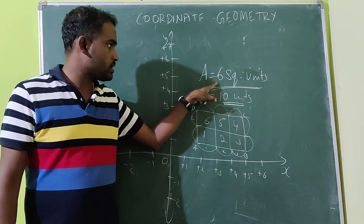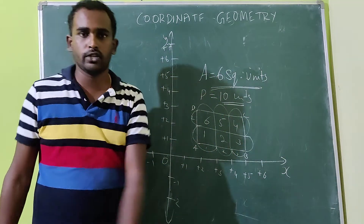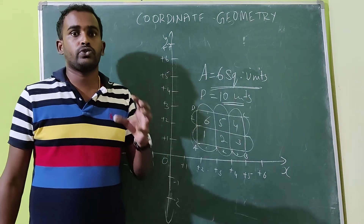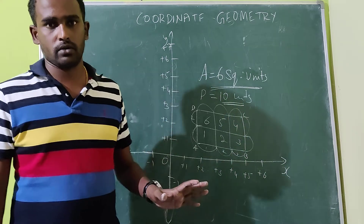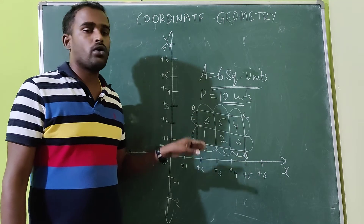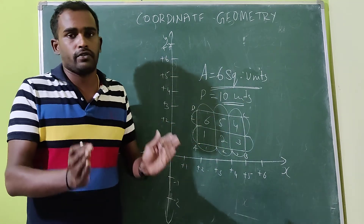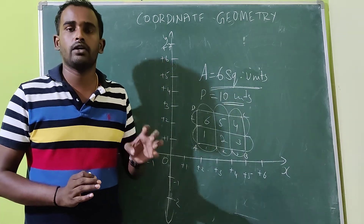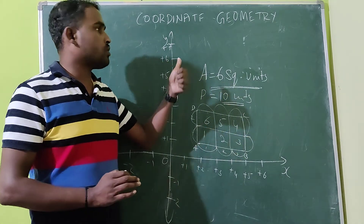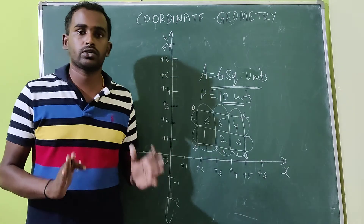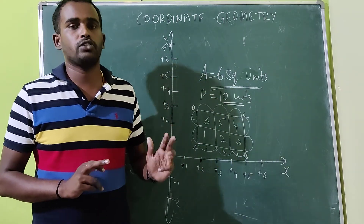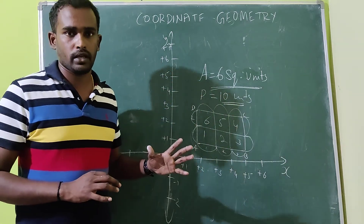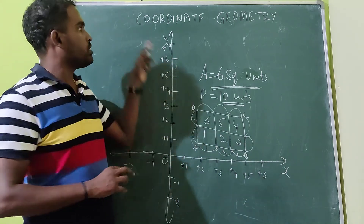So what is meant by coordinate geometry? It is a branch of mathematics where we can solve some geometrical concepts using a coordinate system. This is called coordinate geometry. The coordinate system means the graph. Using the coordinate system to solve geometrical concepts is called coordinate geometry. This is the first definition for coordinate geometry.